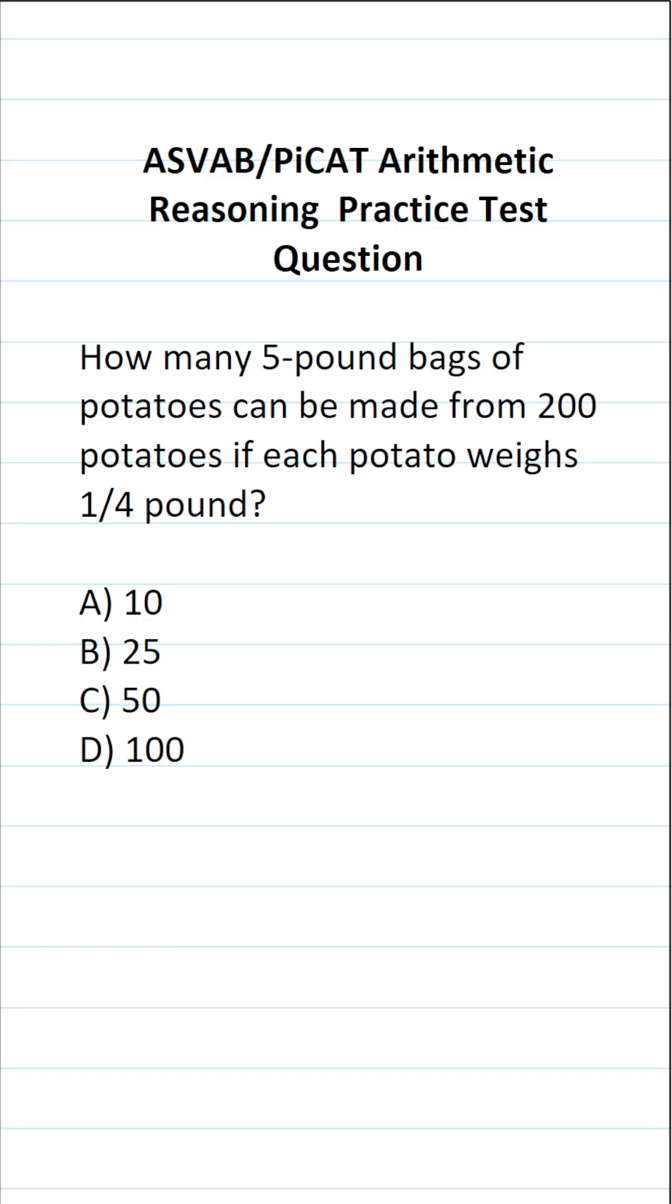In order to answer this question, the first thing we want to calculate is how much these 200 potatoes weigh. So we have 200 potatoes and each of them weighs a quarter of a pound. To find out how much these 200 potatoes weigh, we're going to take 200 and multiply it by one-fourth. Now to make this math very easy to do, I'm also going to express 200 as a fraction by placing it over one.